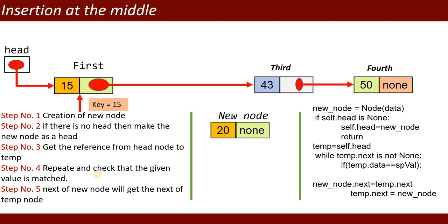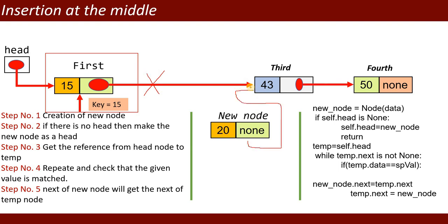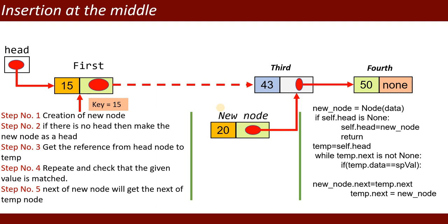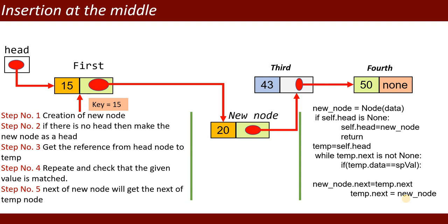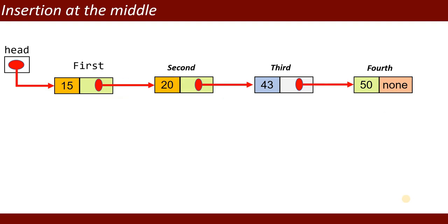When the key matches at temp, the code is: new_node.next = temp.next, which links the new node to the node after temp. Then temp.next = new_node, which links temp to the new node, effectively inserting the new node between temp and the next node. Finally you get the list: 15, 20, 43, 50.